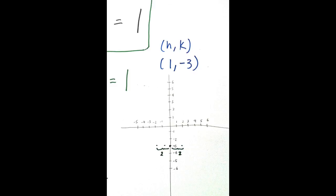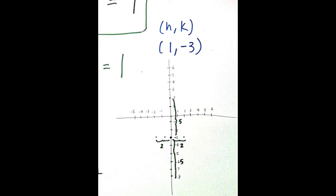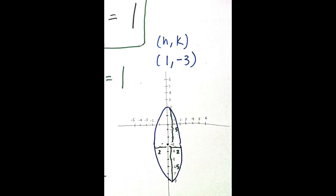b equals 2, so we need to move 2 points left and right of the center of the ellipse to create the width. a equals 5, so we need to move 5 points up and down from the center to create the height of the ellipse. Now we can draw the ellipse by connecting the 4 points.